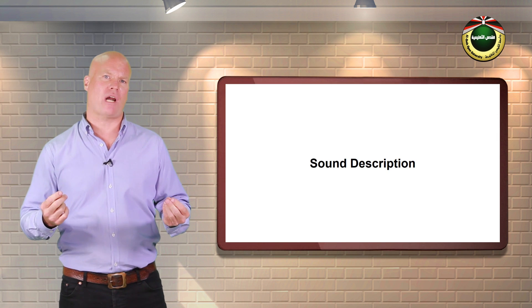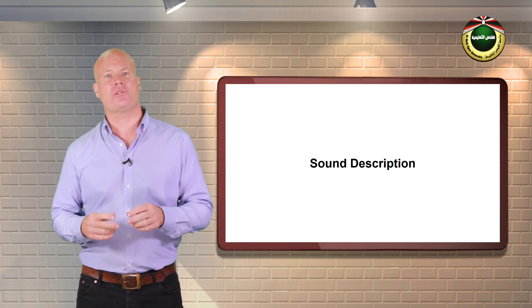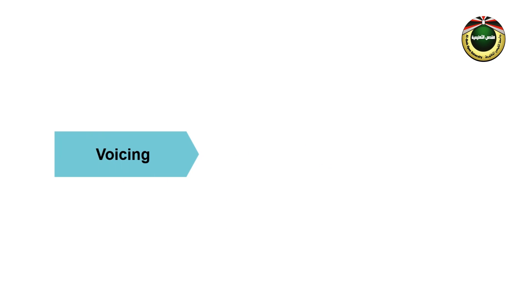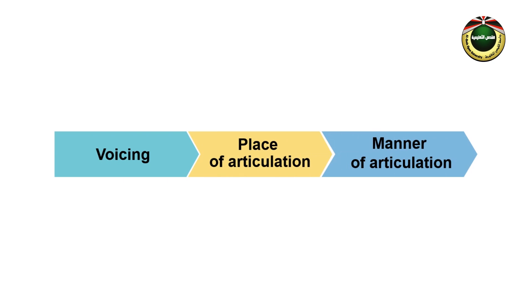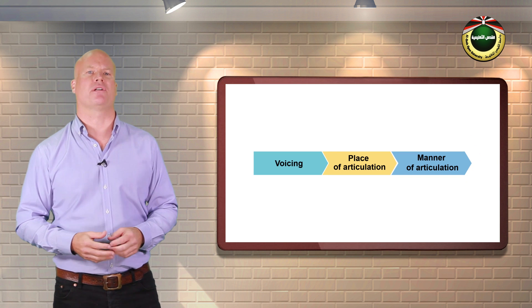When linguists describe consonant sounds, they use three criteria: voicing, place of articulation, and manner of articulation. Let's talk about each of these in turn.